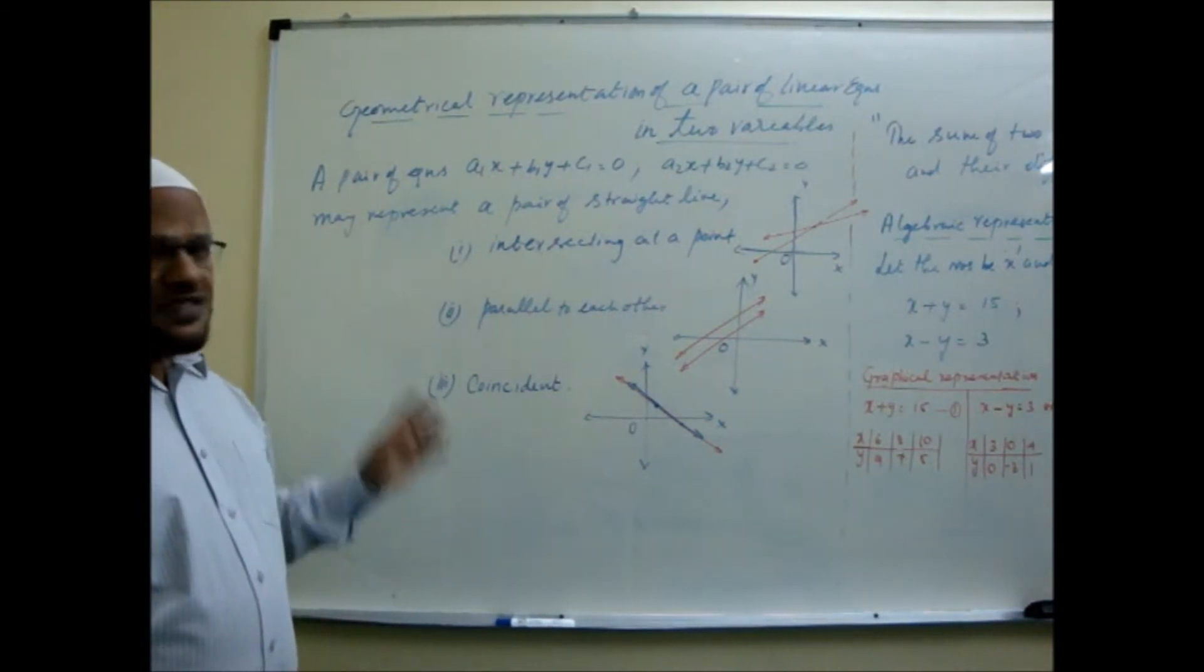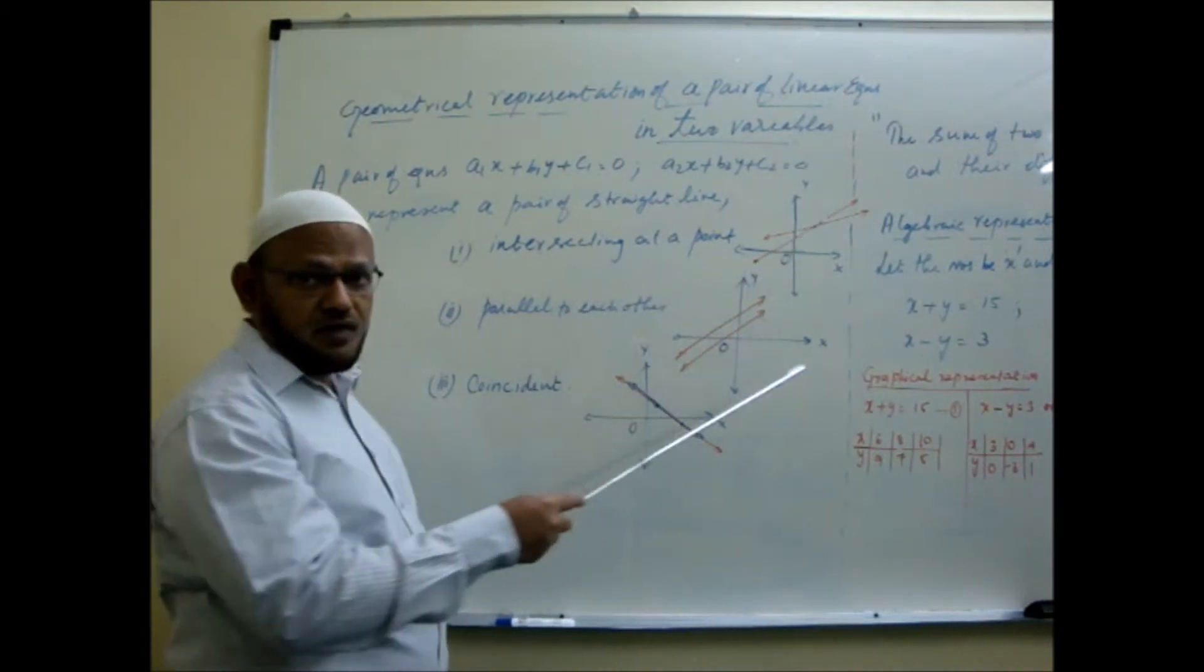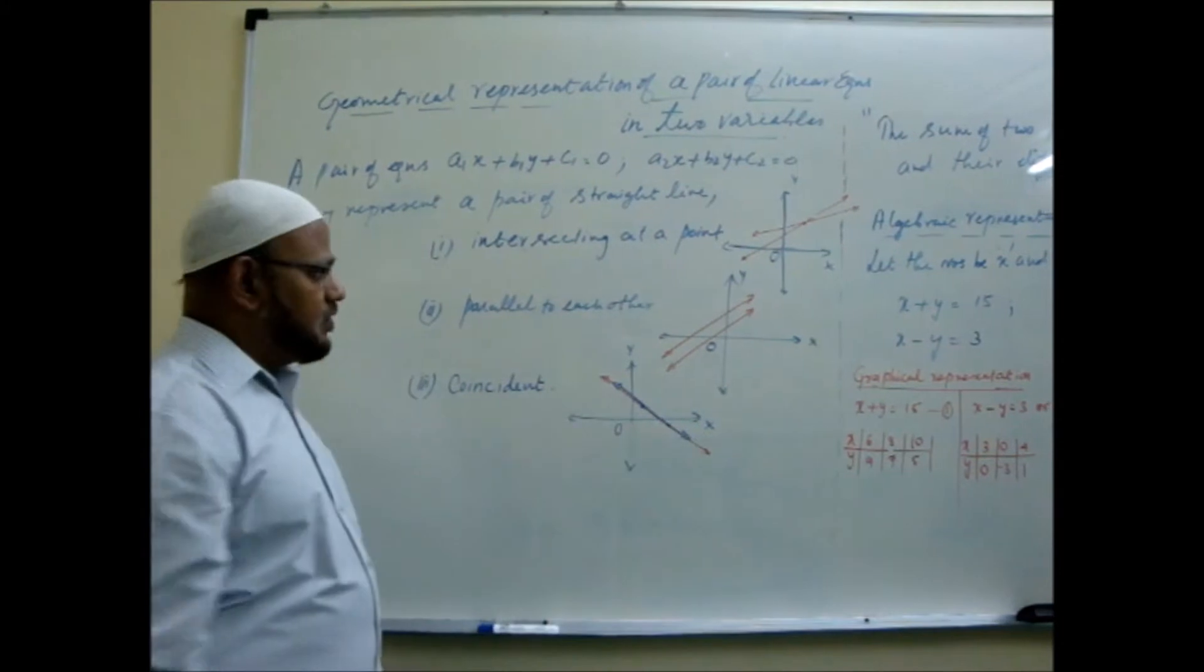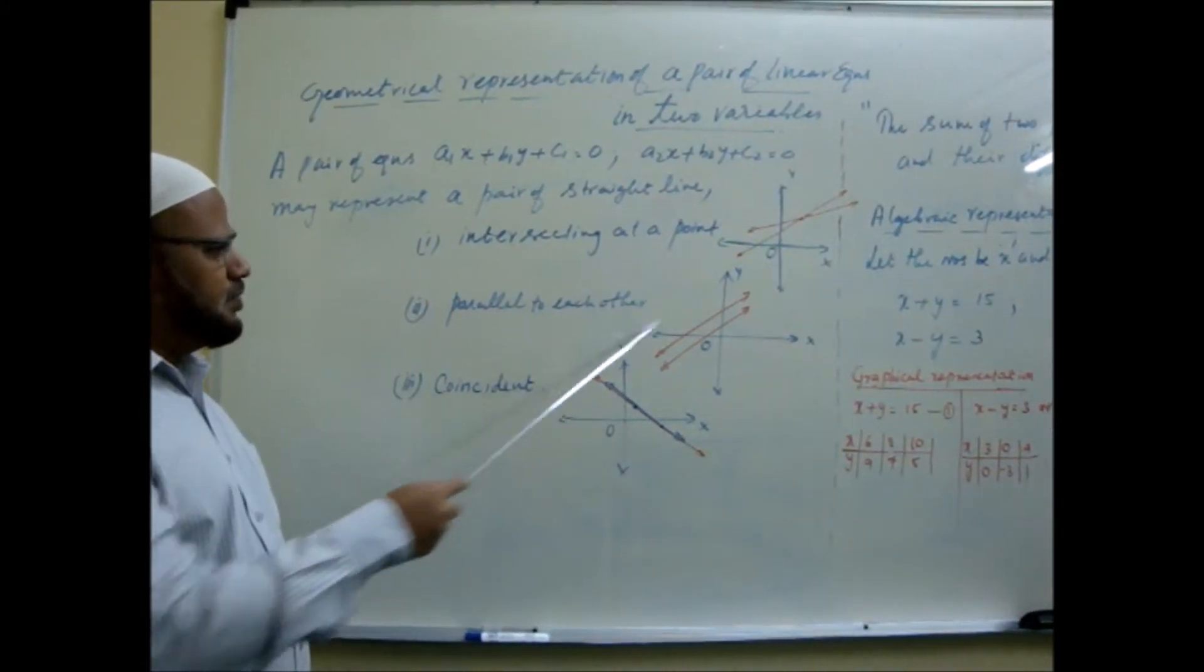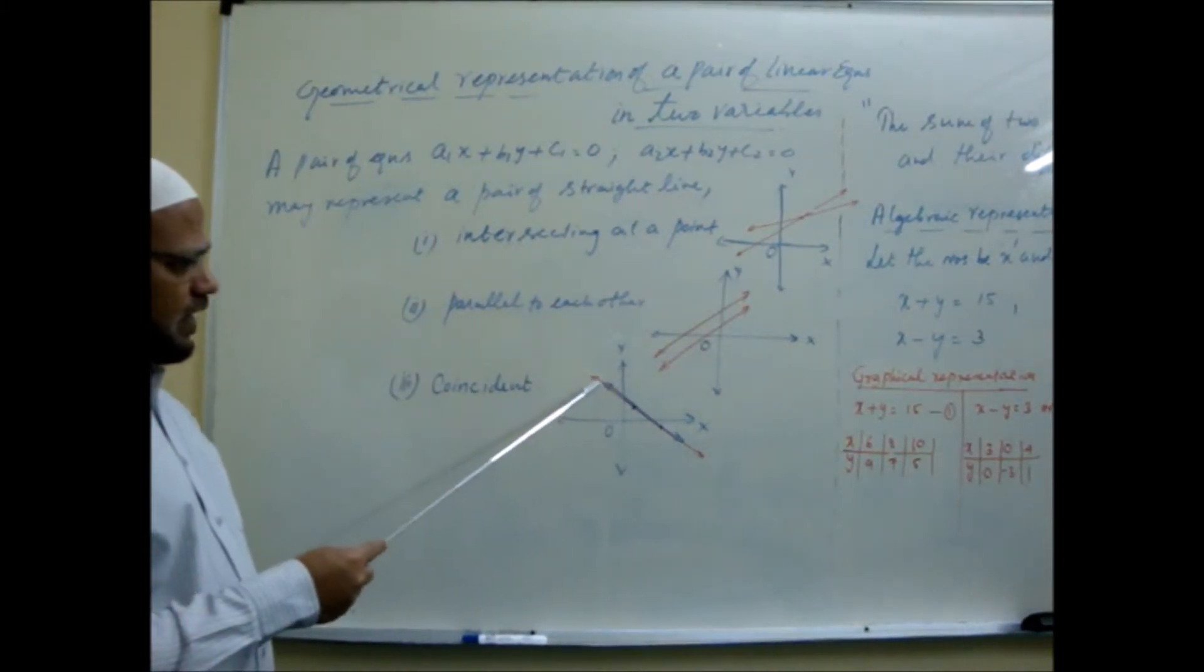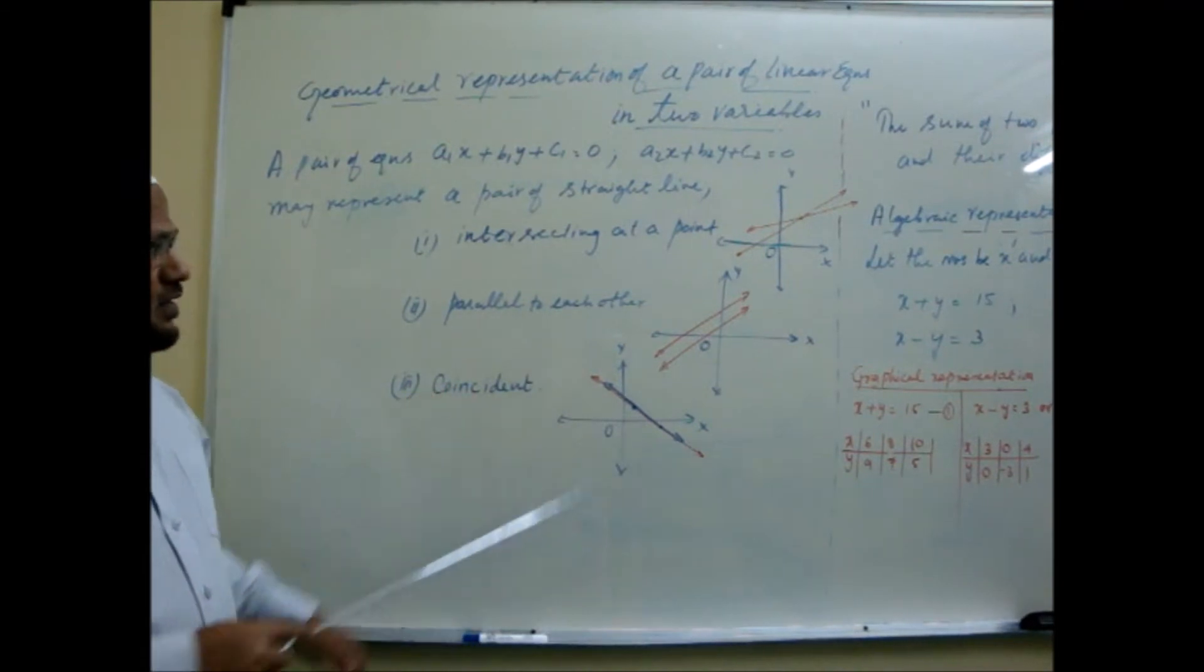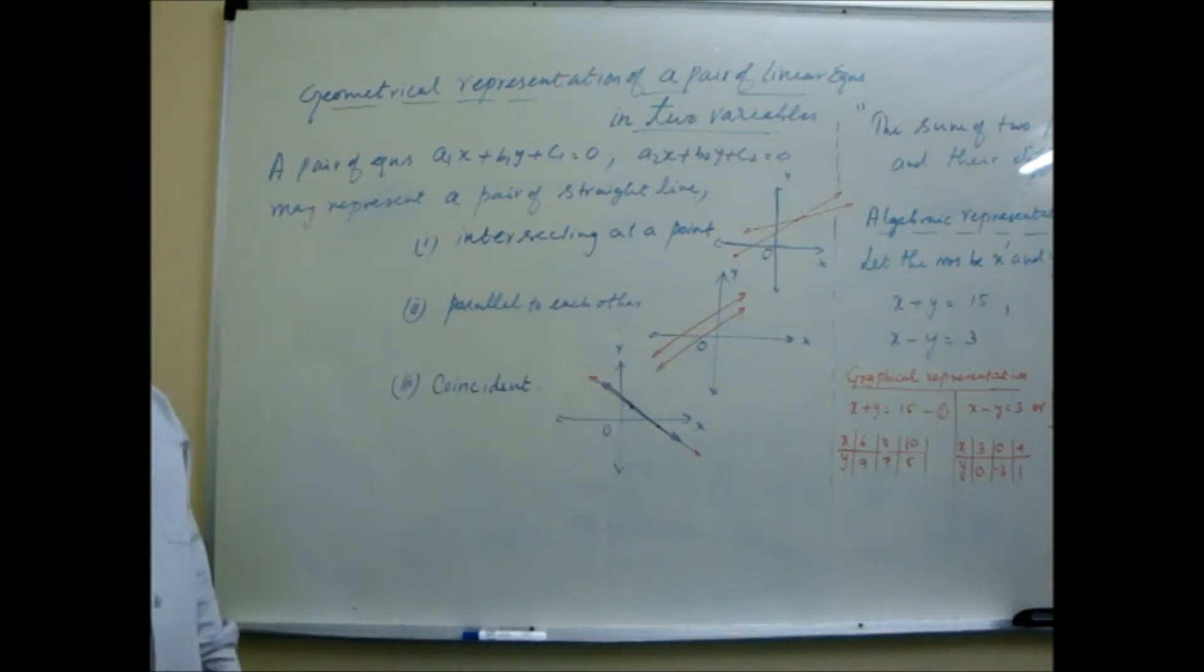What kind of straight lines they can be? Sometimes the two straight lines, if drawn on the same graph sheet, they intersect at a point. What are the other chances? They may go parallel, or one line run over the other. We can call them coincident lines. These three possibilities are there.